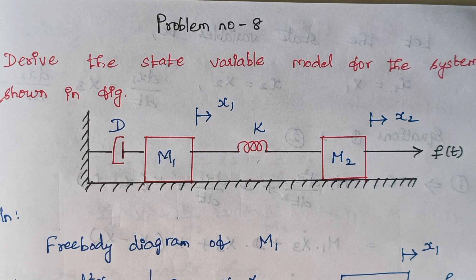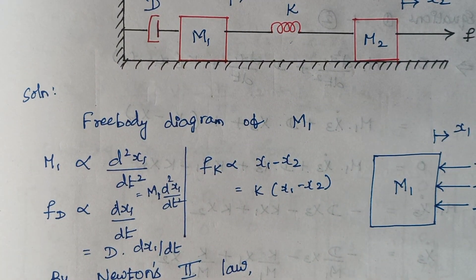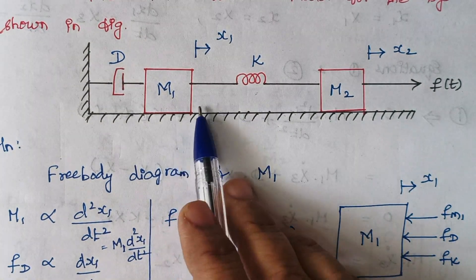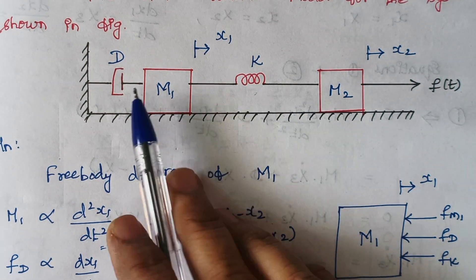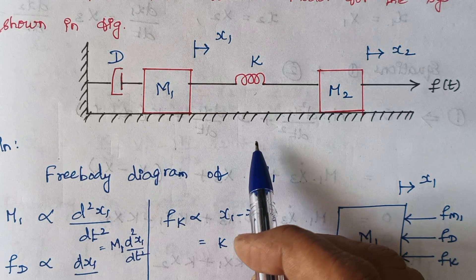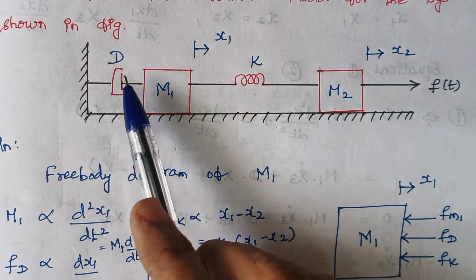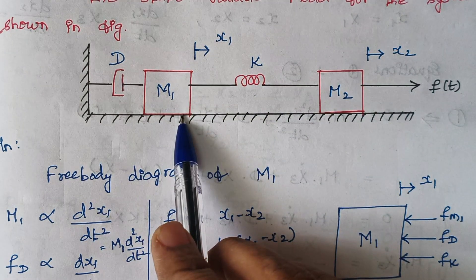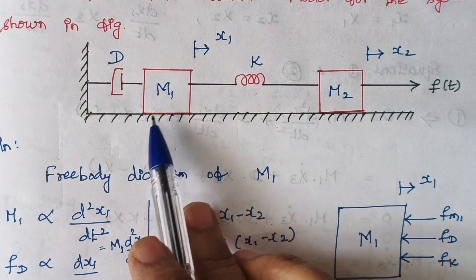The first step is to draw the free body diagram of mass m1. When you look at this mass m1, just count how many elements are connected to it — you see 1, 2. So totally there will be three opposing forces: one is produced by d, one is produced by k, and another one is produced by m1 itself. There is no direct applied force on m1.